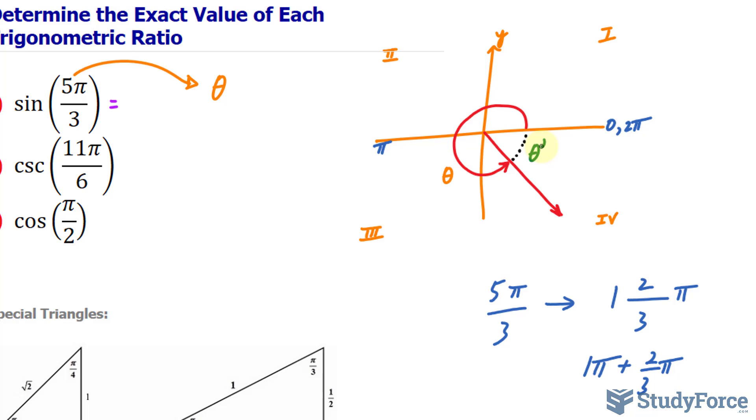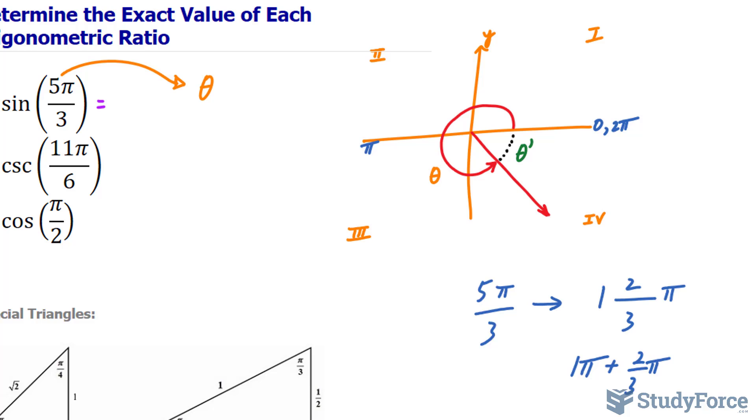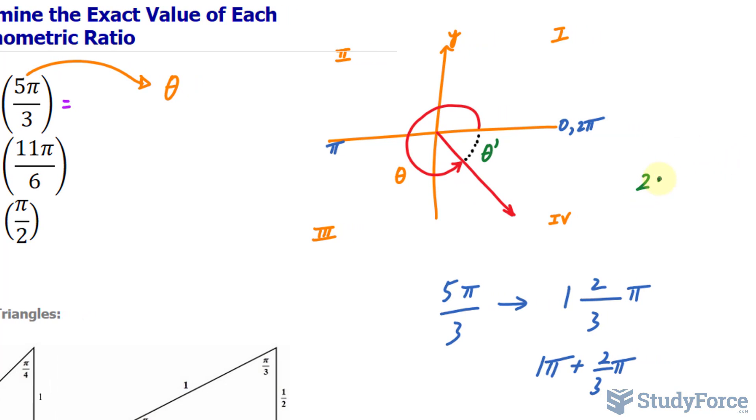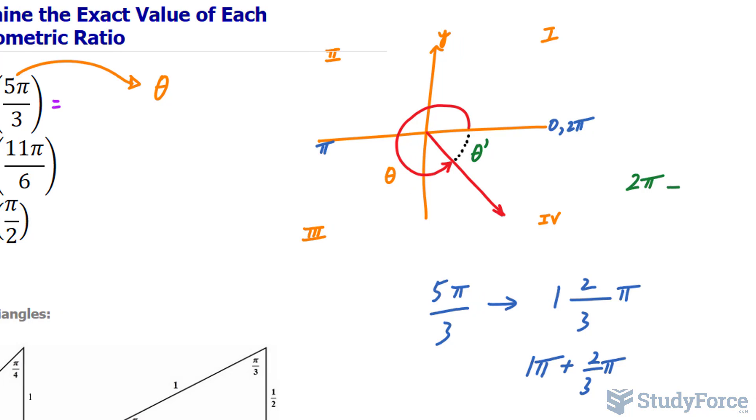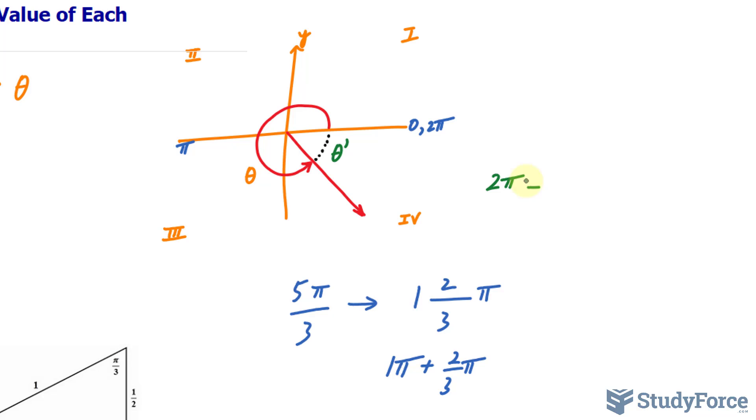If your angle is in the fourth quadrant and you want to find your reference angle, what you do is you take 2π, which is a full circle, and subtract it from this bigger angle, theta. So I'm going to subtract 2π minus 5π over 3.